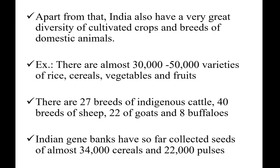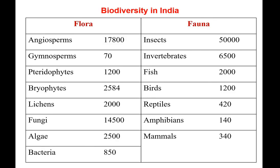India also has very great diversity of cultivated crops and breeds of domestic animals. There are almost 30,000 to 50,000 varieties of rice, cereals, vegetables, and fruits. There are 27 breeds of indigenous cattle, 40 breeds of sheep, 22 breeds of goats, and 8 buffalo breeds. Indian gene banks have so far collected seeds of almost 34,000 cereals and 22,000 pulses.